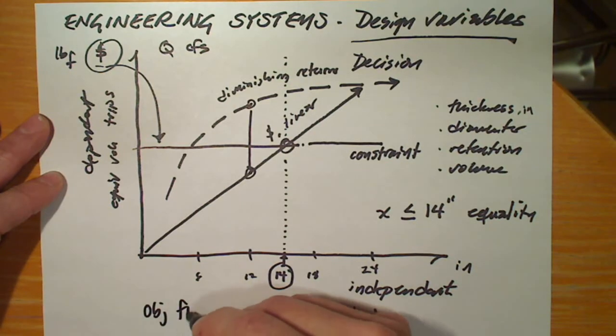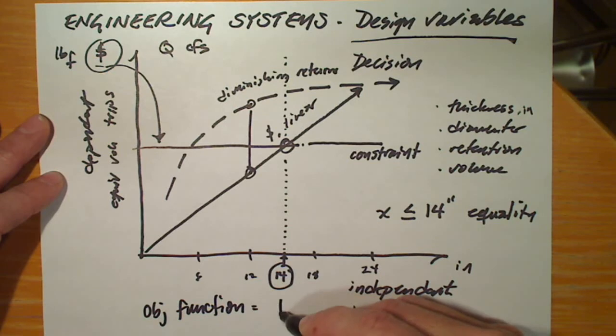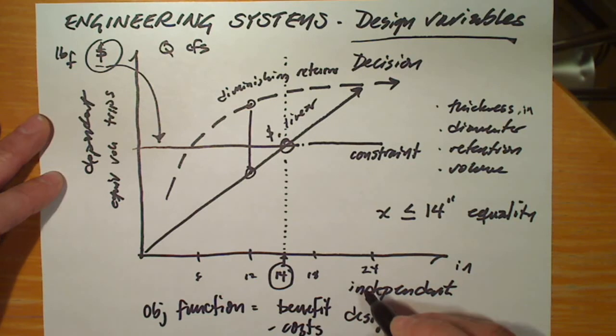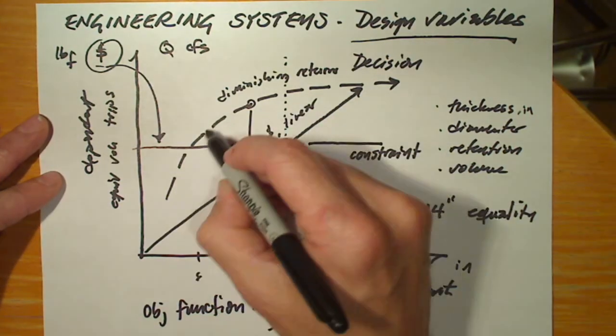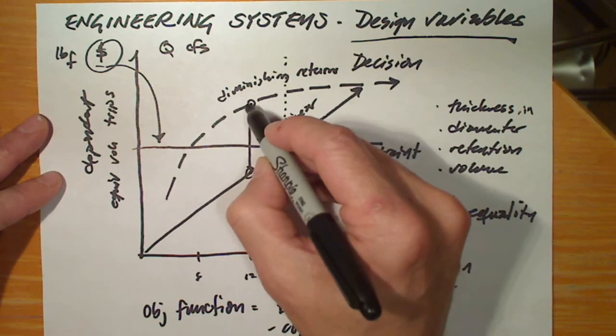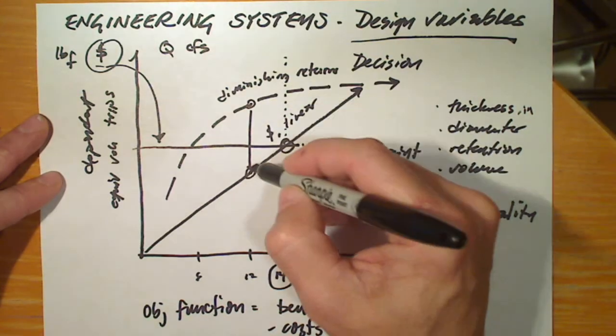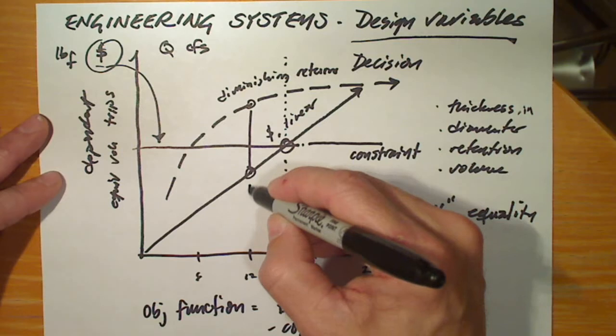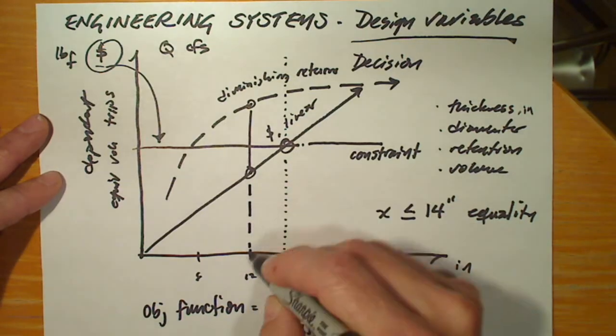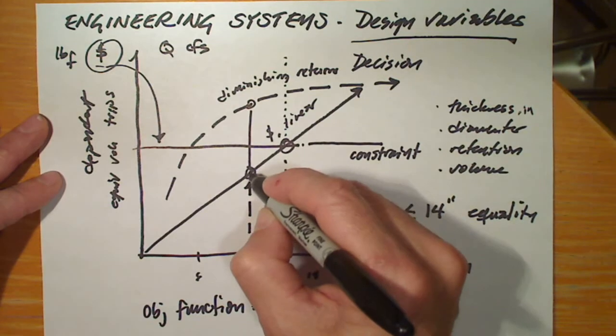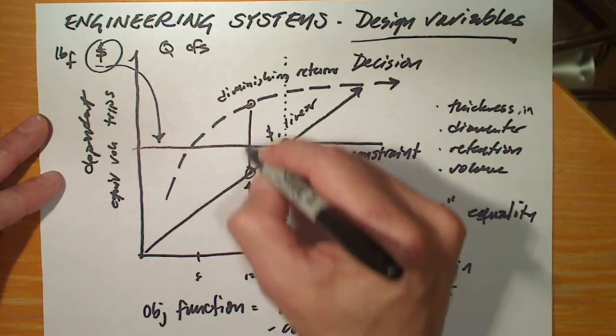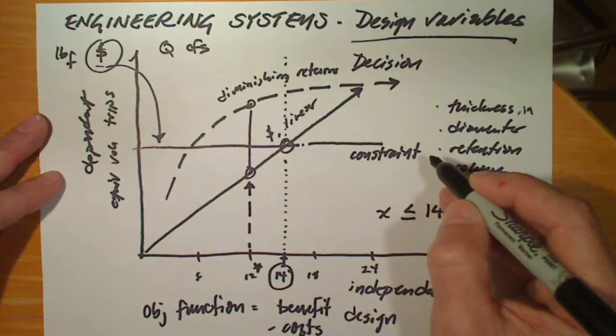In that case, we'd have an objective function equals benefits minus costs. By subtracting the cost curve from the benefit curve, we could use calculus or whatever our model is to determine which pavement thickness corresponds to the maximum benefit relative to the cost required to achieve that benefit.